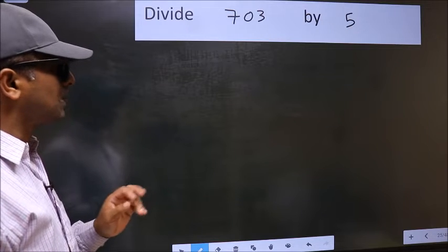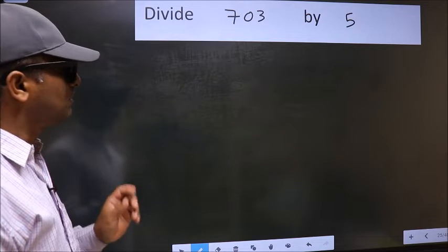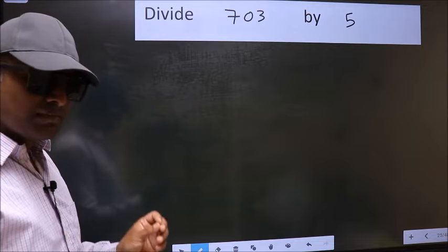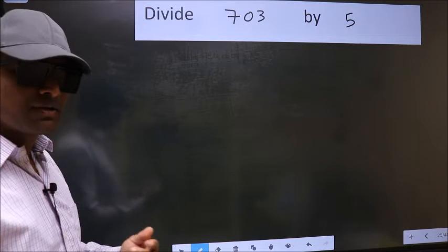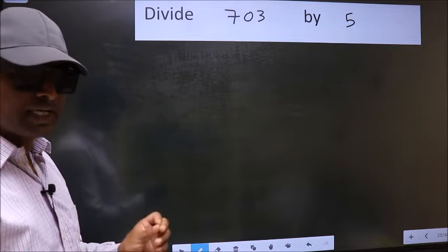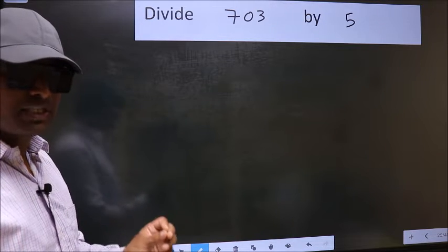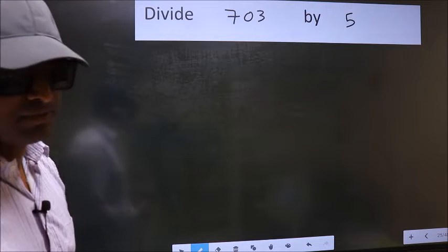Divide 703 by 5. While doing this division, many do this mistake. What is the mistake that they do? I will let you know. But before that, we should frame it in this way.